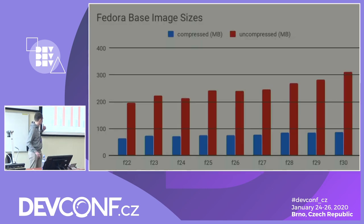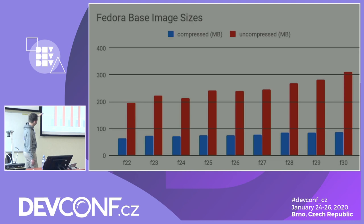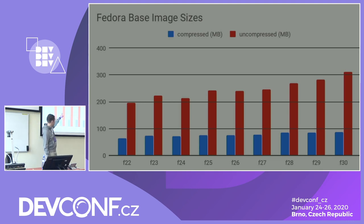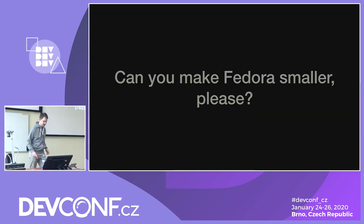So this has happened. I saw this image — these are Fedora container image sizes from Fedora 22 up until Fedora 30, and it went from about 200 megabytes to over 300 megabytes. There's a dip in here where there was some minimization effort, and it just grew again. The question was: can you make Fedora smaller, please?